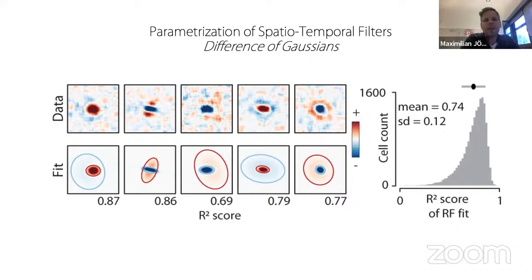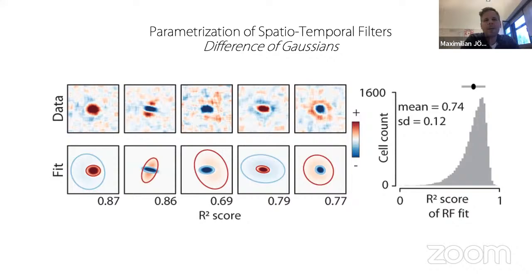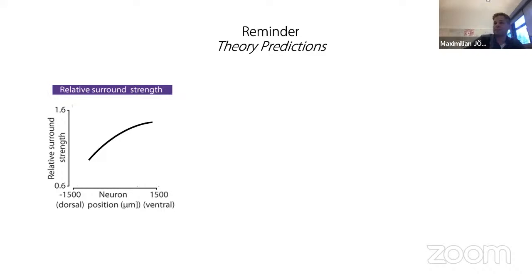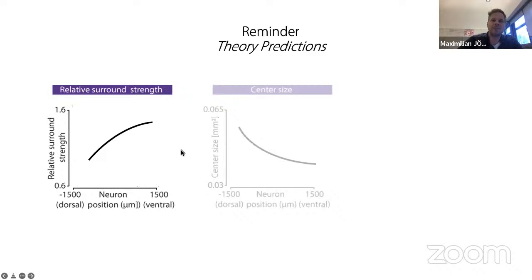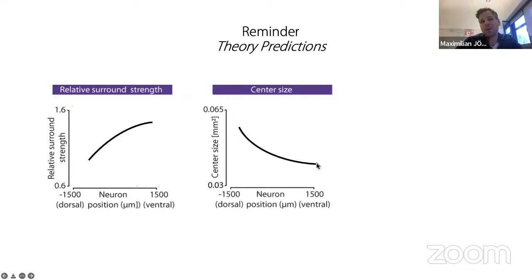Let me remind you of the theoretical predictions. The relative center-to-surround strength will depend on position on the dorsal-ventral axis such that the more ventral you go, the stronger the surround is. The center sizes will be smaller the more ventral you go. And there must be a particular position — where the horizon should be — where you have a very strong asymmetry because above the horizon the signal-to-noise is higher and below it is lower. Let's see what the data says.